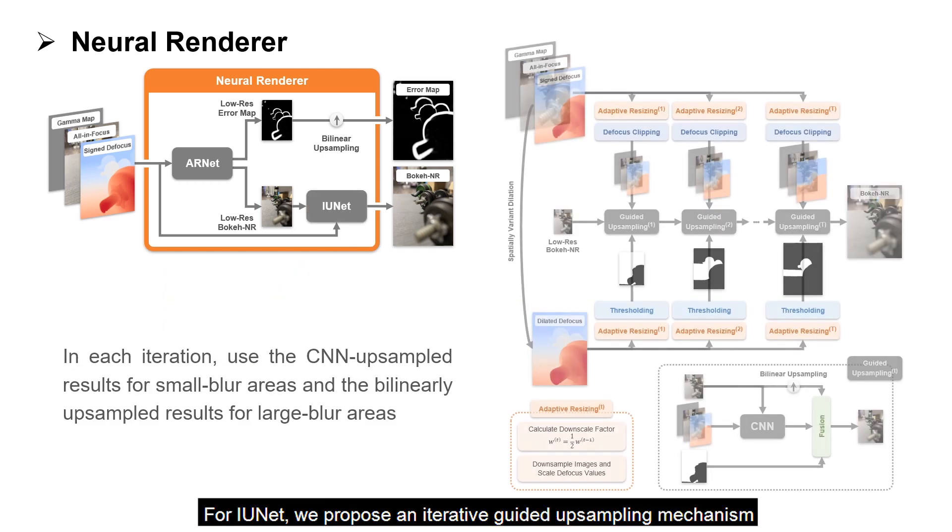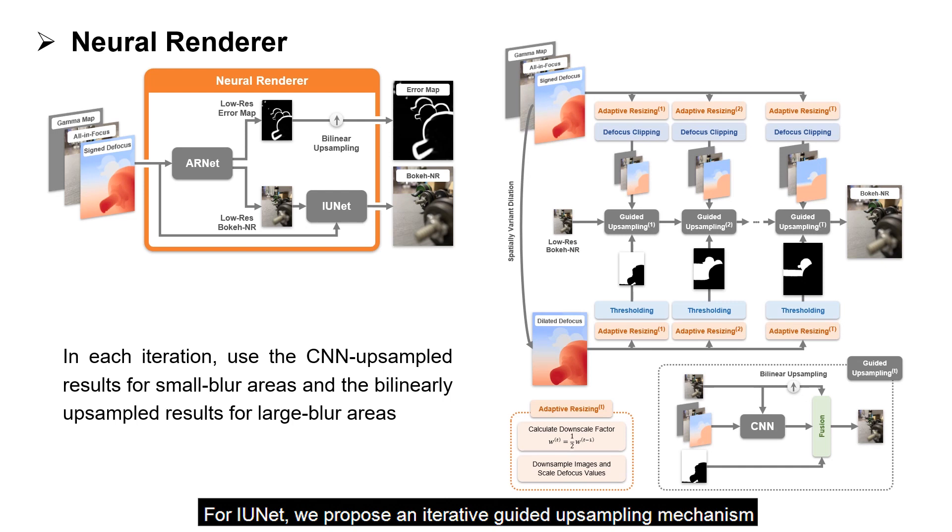For IUNet, we propose an iterative guided upsampling mechanism to avoid the fuzziness and aliasing around in-focus areas during the upsampling.